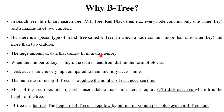There is a huge amount of data we can store in main memory, but when the amount of data is high, data is read from the disk in the form of blocks. Disk access time is very high compared to main memory access time, so at that time we use B-tree — B-tree reduces the number of disk accesses. Search, insert, delete, max, min — all these operations depend on the height of the tree, which is O(h). B-tree is a fat tree, meaning one node can store multiple values according to the order of the tree, so the height of B-tree is kept low by putting maximum possible keys in one node.